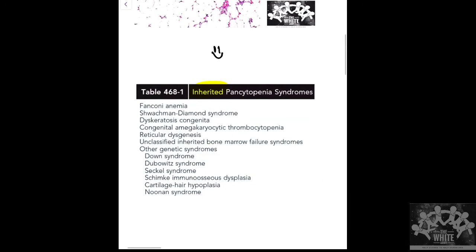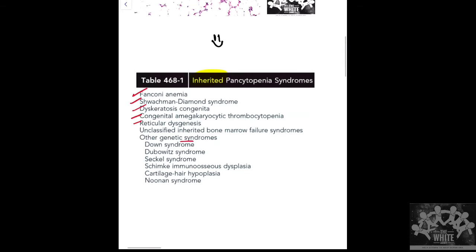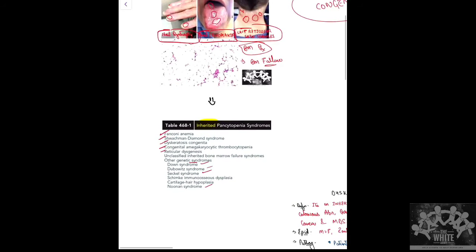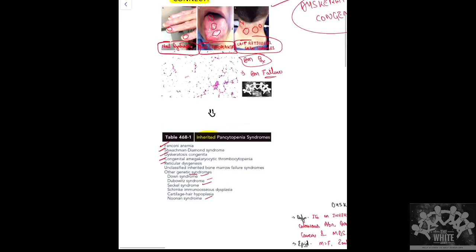For inherited pancytopenia, we can think of Fanconi anemia, Shwachman-Diamond, Dyskeratosis Congenita, and rare syndromes like congenital amegakaryocytic thrombocytopenia, reticular dysgenesis, and certain genetic syndromes like Down syndrome. Each has its characteristic features, and for Dyskeratosis Congenita, that is the triad.